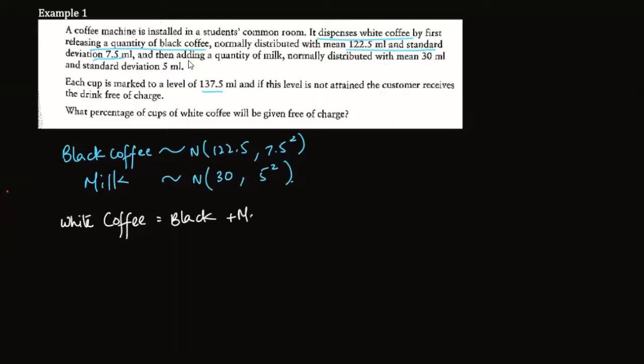To find the white coffee distribution, I need black plus milk. When two things add, their means are added and their variances are added. The calculation gives us 137.5 for the mean and 81.25 for the variance.